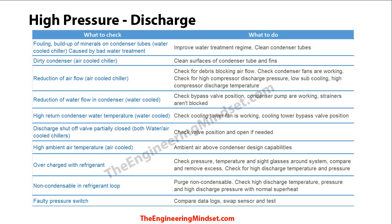Another fairly common issue is the chiller being overcharged with refrigerant — check your pressures and temperatures around the system. It could also be that a non-condensable material has entered the refrigerant loop, so check for this and purge it out if suspected. If you've checked all of the above and nothing seems wrong, it's likely a faulty pressure switch — swap it out and test it.